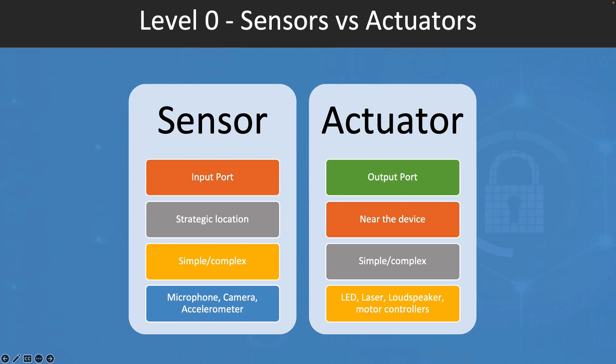From the location perspective, sensors are usually placed at strategic points within the industrial process to monitor and measure various physical parameters, while actuators are typically located near the device that need to be controlled, such as a valve, a motor, or a switch.